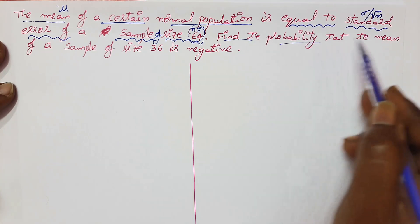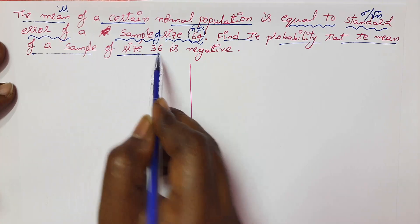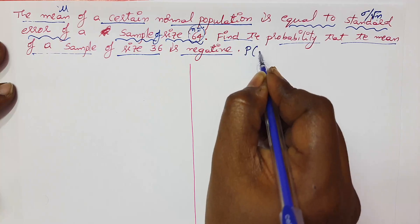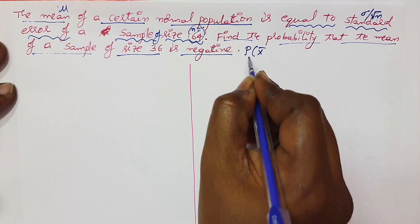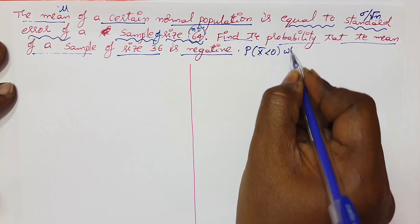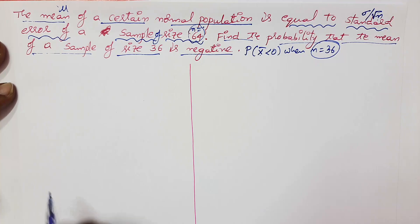Find the probability that the mean of a sample of size 36 is negative. So mean of the sample is represented by x bar and we have to find out when x bar should be negative when n equals 36. This is the given statement.